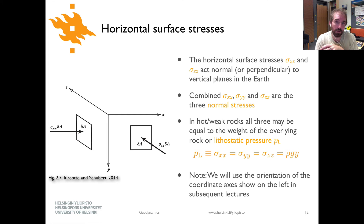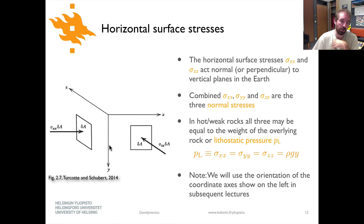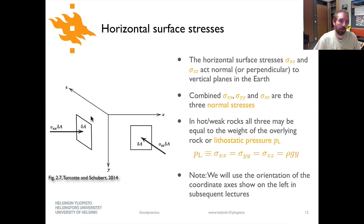Now let's get into the naming convention for stresses and talk about horizontal surface stresses. Previously we discussed sigma yy, the vertical surface stress. The two horizontal surface stresses paired with sigma yy are sigma xx and sigma zz, which act normal or perpendicular to vertical planes in the earth. We're now looking at forces acting perpendicular to the x and z axes. Combined, sigma xx, sigma yy, and sigma zz are the three normal stresses acting perpendicular to the three coordinate directions x, y, and z.